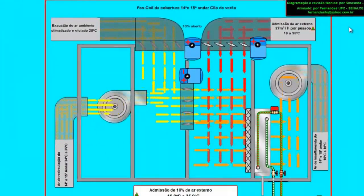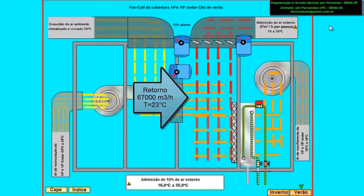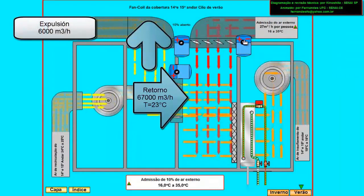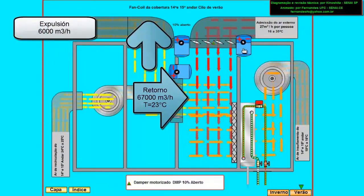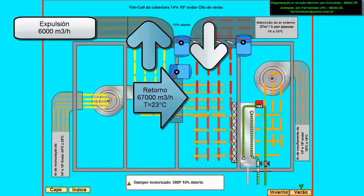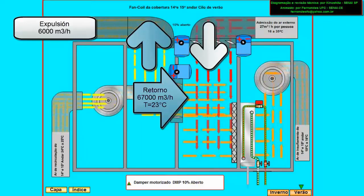Let's show the work points. 1. Return flow from the premises, with a value of 67,000 cubic meters per hour, at a temperature of 23 degrees Celsius. 2. Expulsion flow to the outside, with a value of 6,000 cubic meters per hour at 23 degrees Celsius. This percentage represents a loss of efficiency of the air handling unit, but it is justified by hygienic conditions. 3. Replacement flow, which comes from outside at a temperature of 35 degrees Celsius, with a value of 6,000 cubic meters per hour.